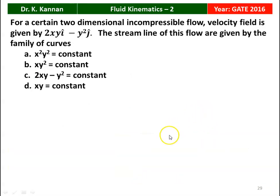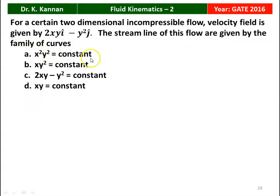The next question, again from the 2016 Question Paper: for a certain two-dimensional incompressible flow, the velocity field is given by 2xy i̊ − y² ĵ. The streamlines of this flow are given by the family of curves. Options: A. x²y² = constant, B. xy² = constant, C. 2xy − y² = constant, D. xy = constant.